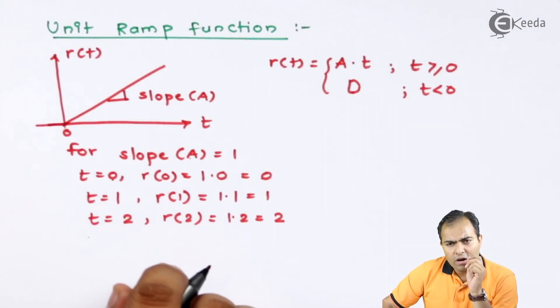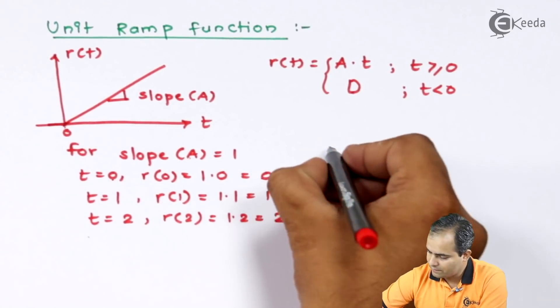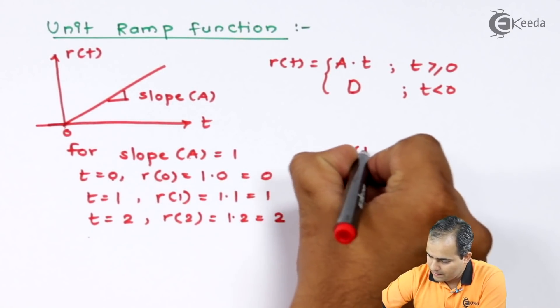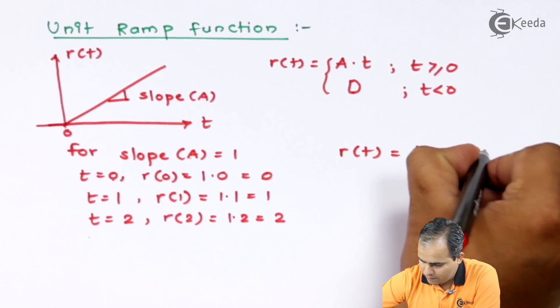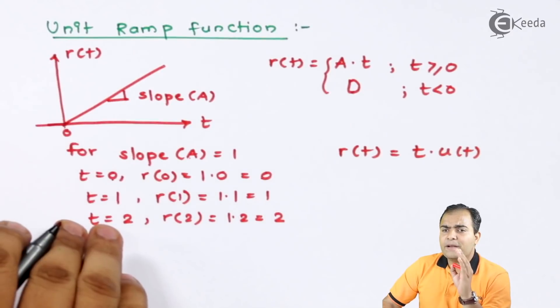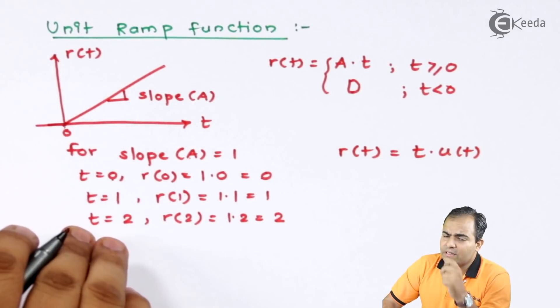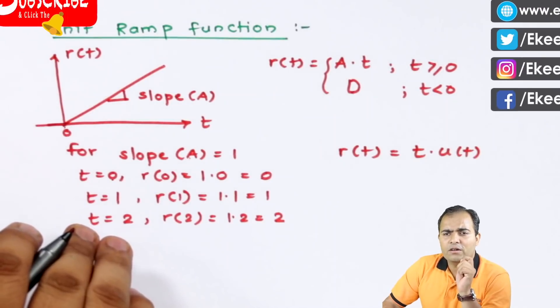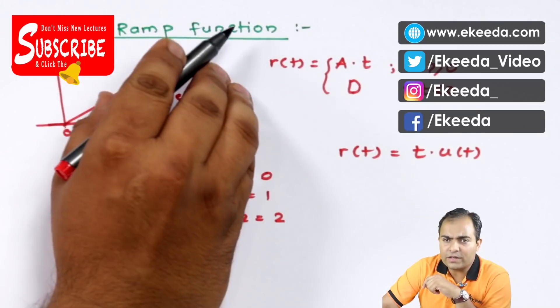Now, you can obtain this ramp wave using unit step also. If you multiply t with a unit step, then your graph will always produce a unit ramp function.